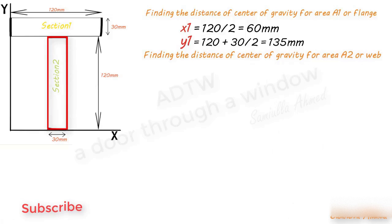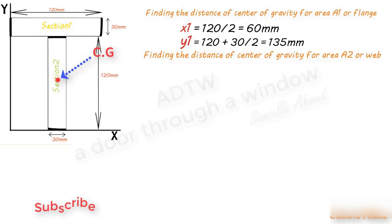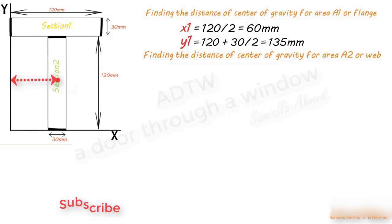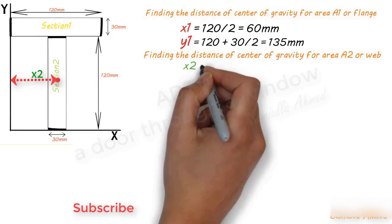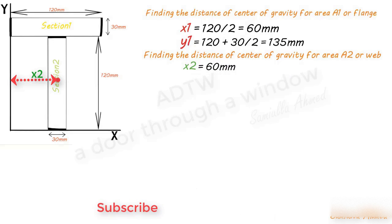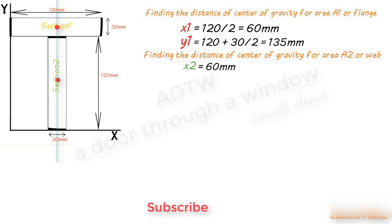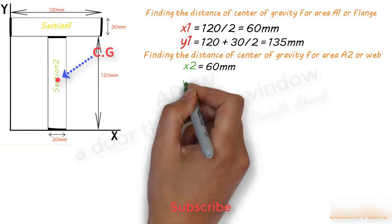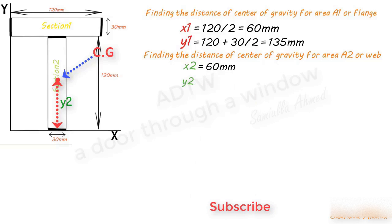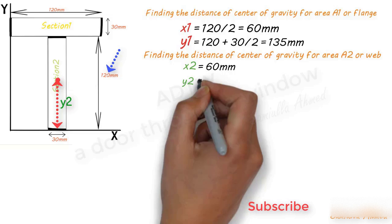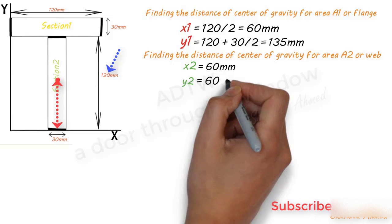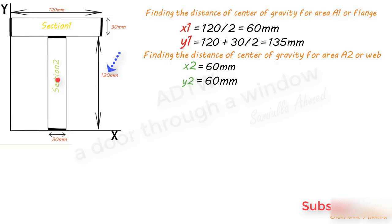Similarly, the center of gravity of Section 2 lies approximately at its center. The distance of the CG of Section 2 from the Y-axis, denoted x2, is also 60 mm, since the centers of both sections lie on the same line. The distance of the CG of Section 2 from the X-axis, denoted y2, equals half of 120 mm, which is 60 mm, because it lies exactly at half of its height.